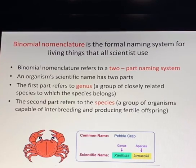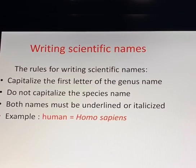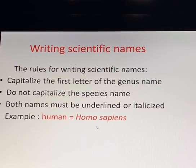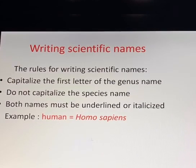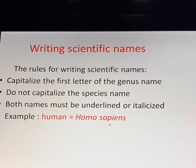As there are rules for naming species, there are also rules for writing scientific names. The first part of the scientific name, which refers to the genus, always starts with a capital letter. The second part of the scientific name always starts with a small letter. Both parts are written in italic, or if that is not possible, both parts must be underlined. You have the example here of Homo sapiens, which is the scientific name of humans. Homo refers to the genus and starts with a capital letter, and sapiens refers to the species and starts with a small letter.